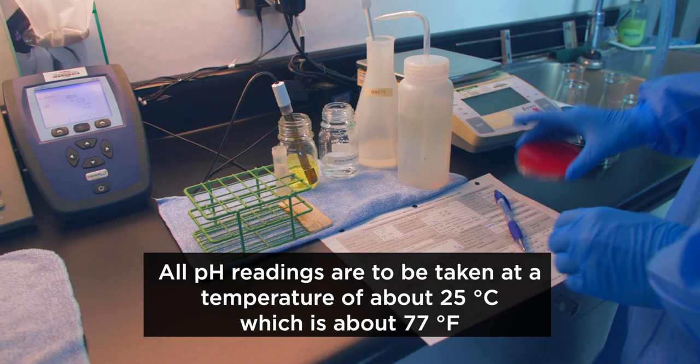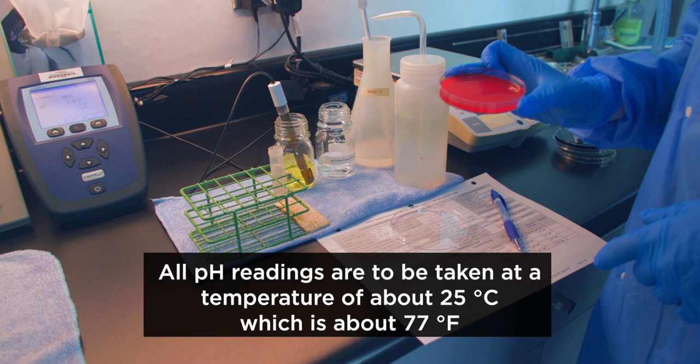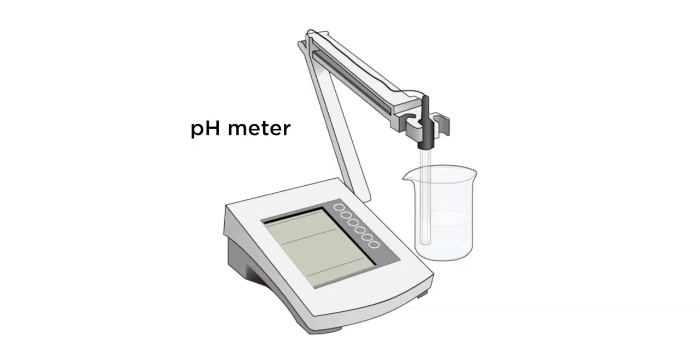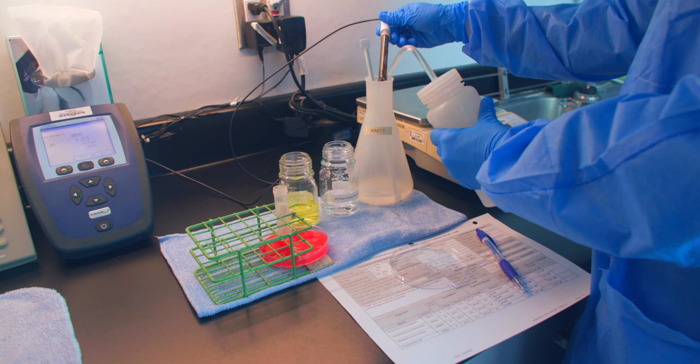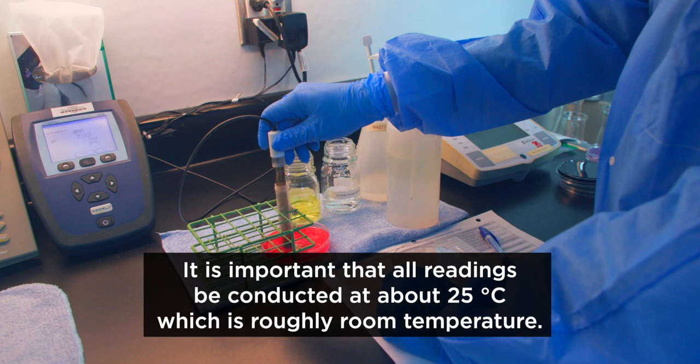All pH readings must be taken at a temperature of about 25 degrees Celsius, which is about 77 degrees Fahrenheit. pH can be read by a meter or with strips of paper that are impregnated with a pH indicator substance. It is important that all readings be conducted at room temperature, as pH readings will change in colder or warmer temperatures.